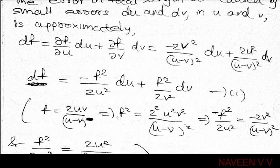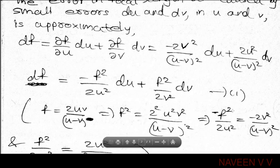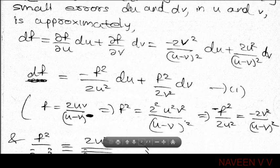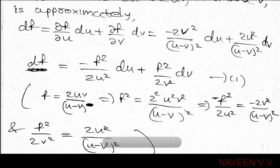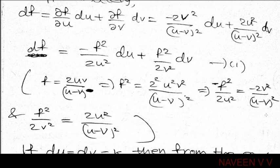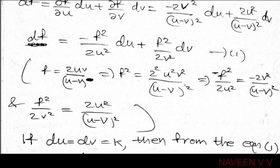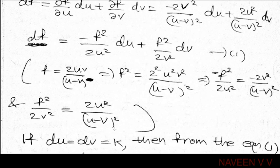Here f² = 4u²v² / (u minus v)². So minus f²/(2u²) = minus 2v² / (u minus v)², and f²/(2v²) = 2u² / (u minus v)².